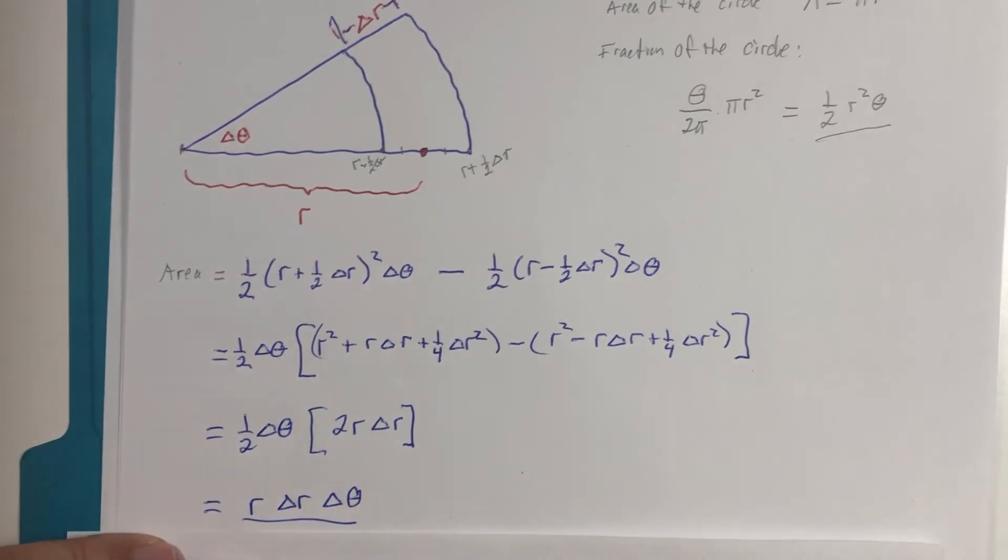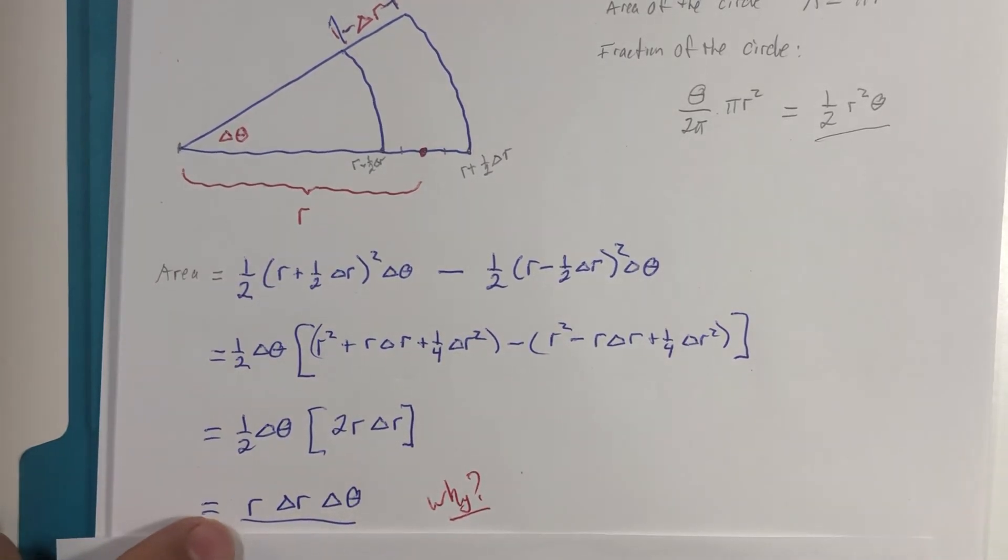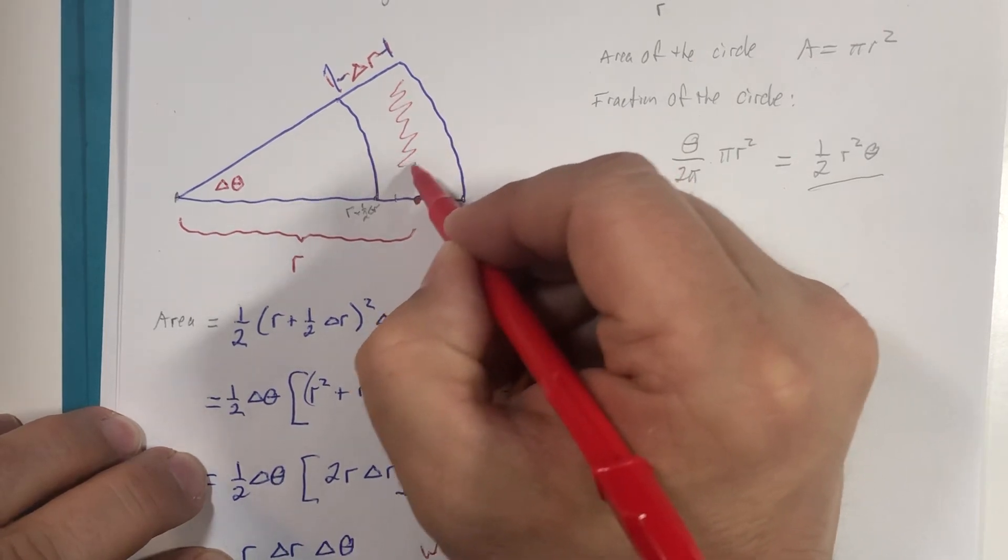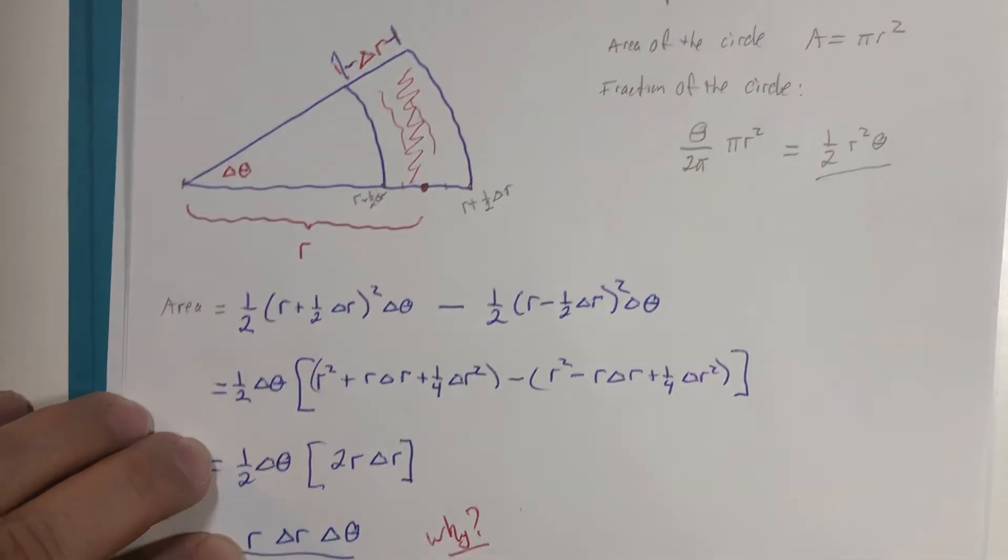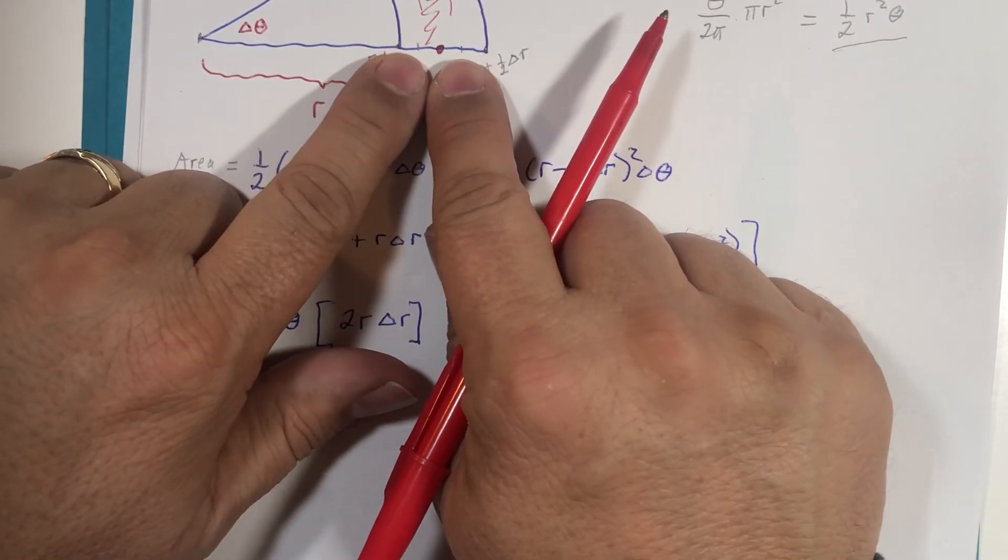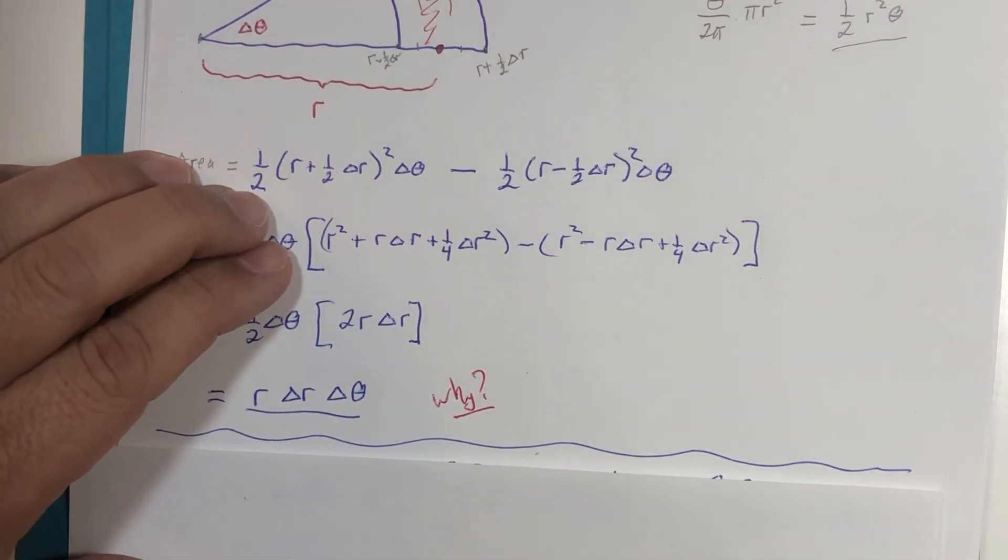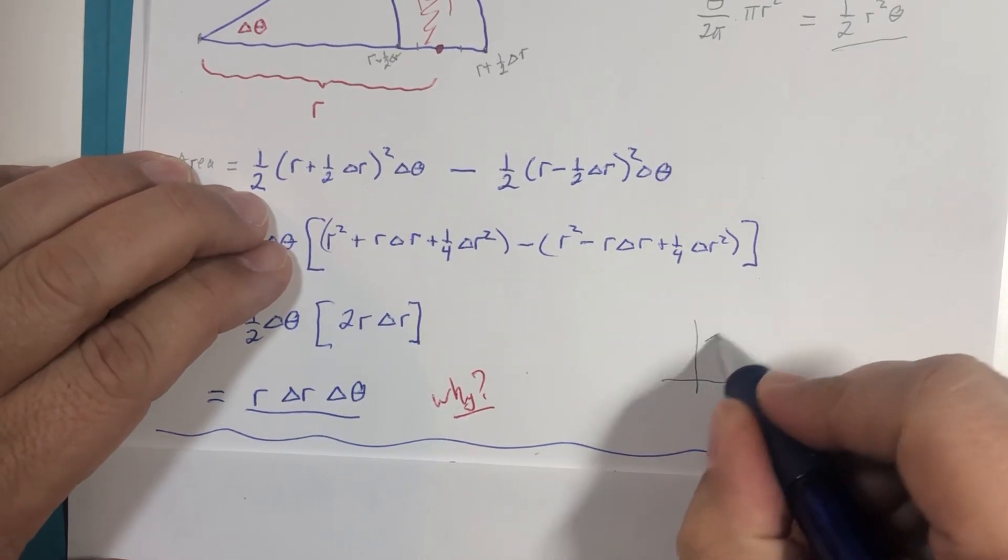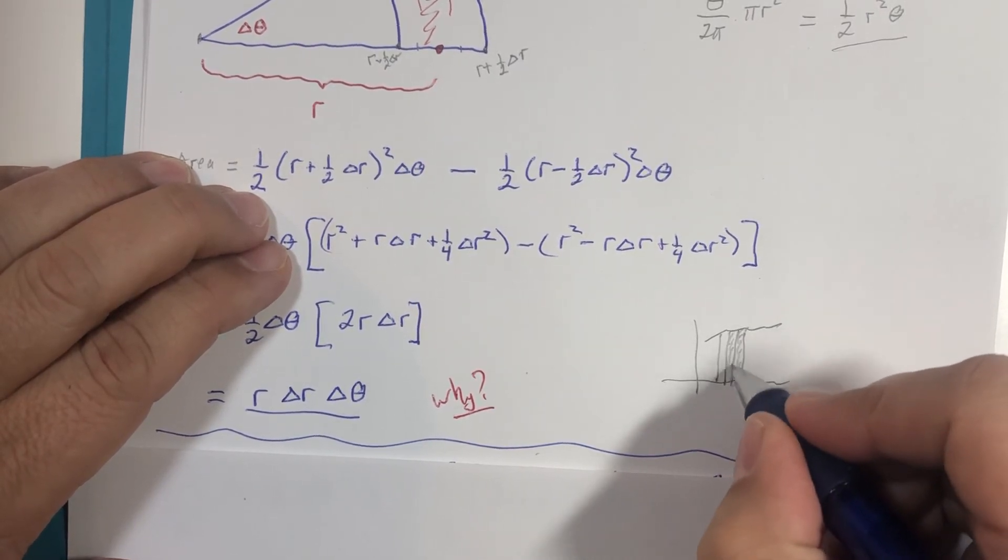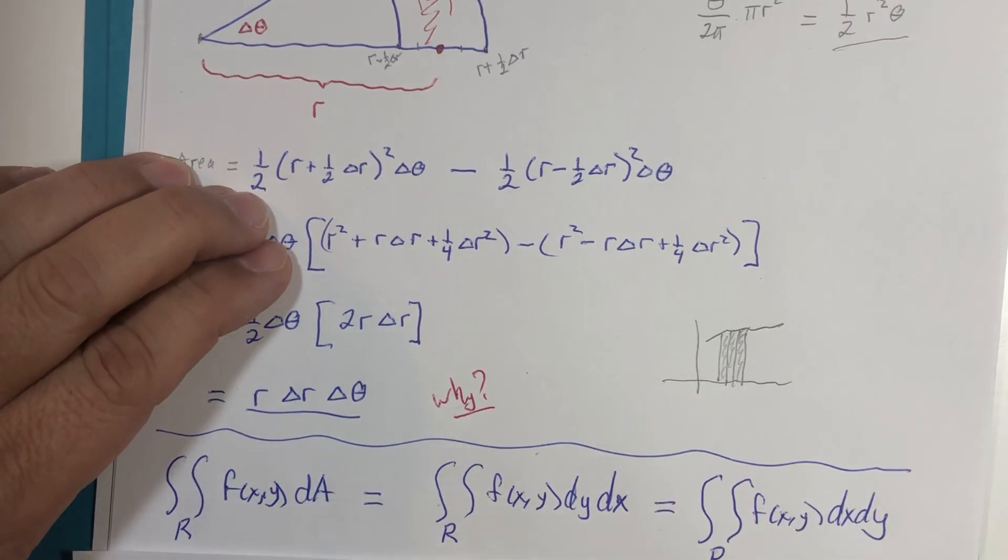Now why do we even care? This is the measurement of that region right in there. Well, here is why we care: In integration, these little delta values get quite small—the angle is going to be small, Δr is going to be small. If you recall, when we do the definite integral in calc 1, we divide into small little rectangles. We know these rectangles aren't perfect, but the smaller they get and the more that we have, the closer we get to approximating the actual area.